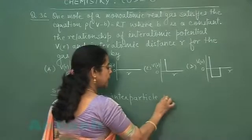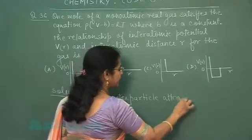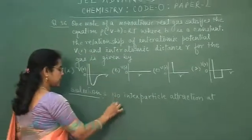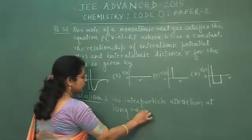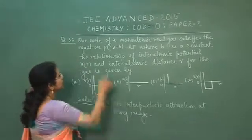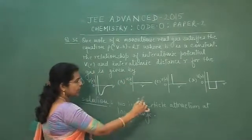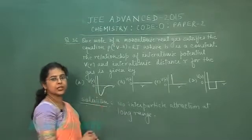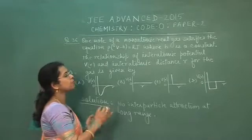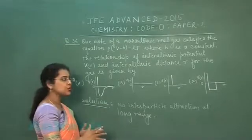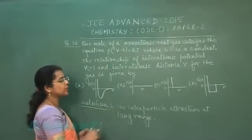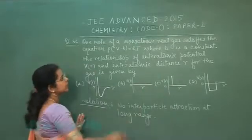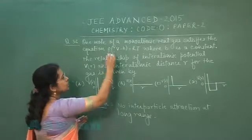No interatomic attraction at long range, which means at large distance, the interparticle potential should be zero. Now interparticle potential at long range, we have shown in all four options. Second statement which we will conclude,